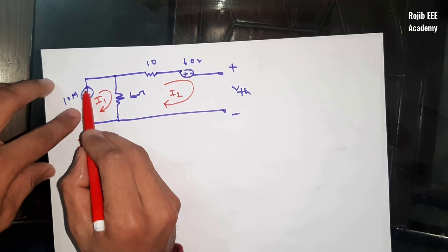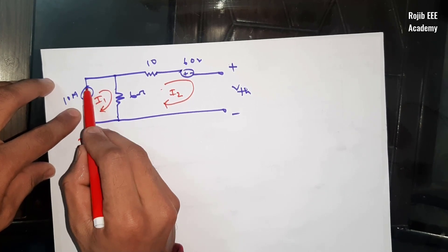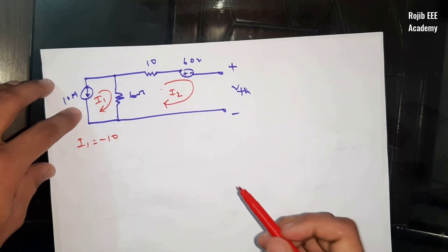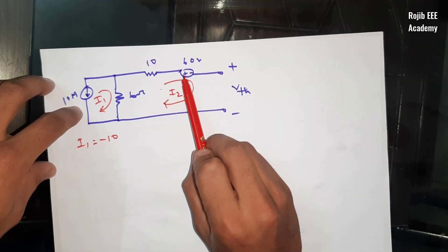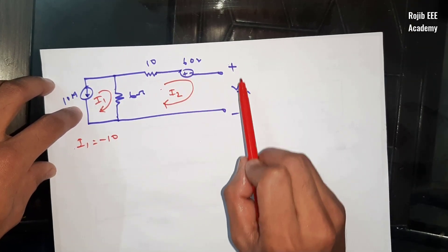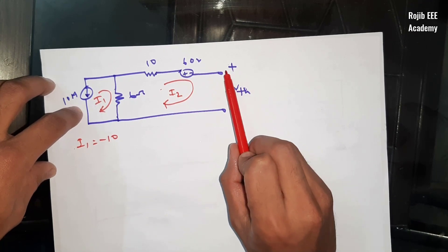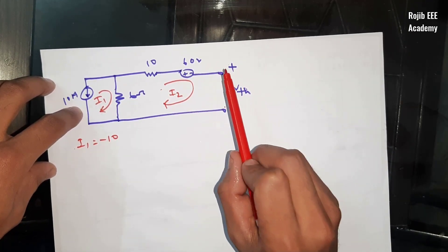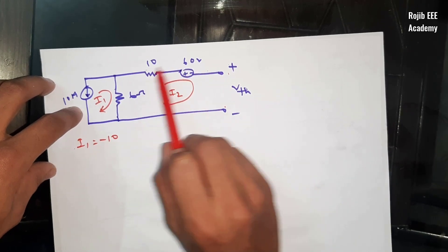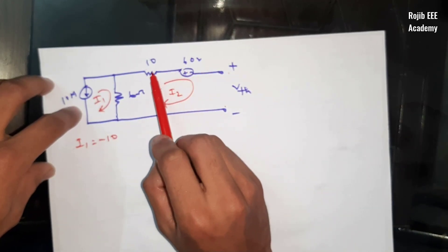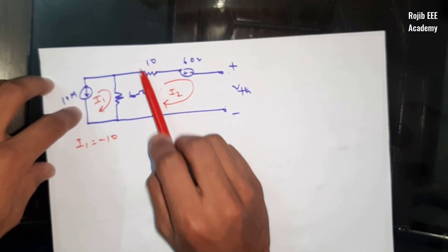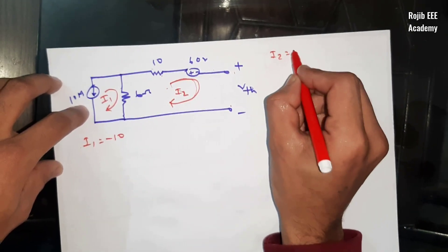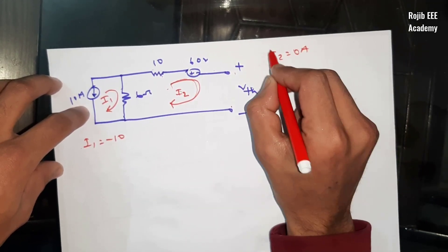Looking at the 10A current source in the opposite direction of the loop, i₁ is equal to minus 10. This is a very important factor. At the i₂ loop, since the load resistance has been removed and the terminal is open, no current flows through that branch — it is 0A.